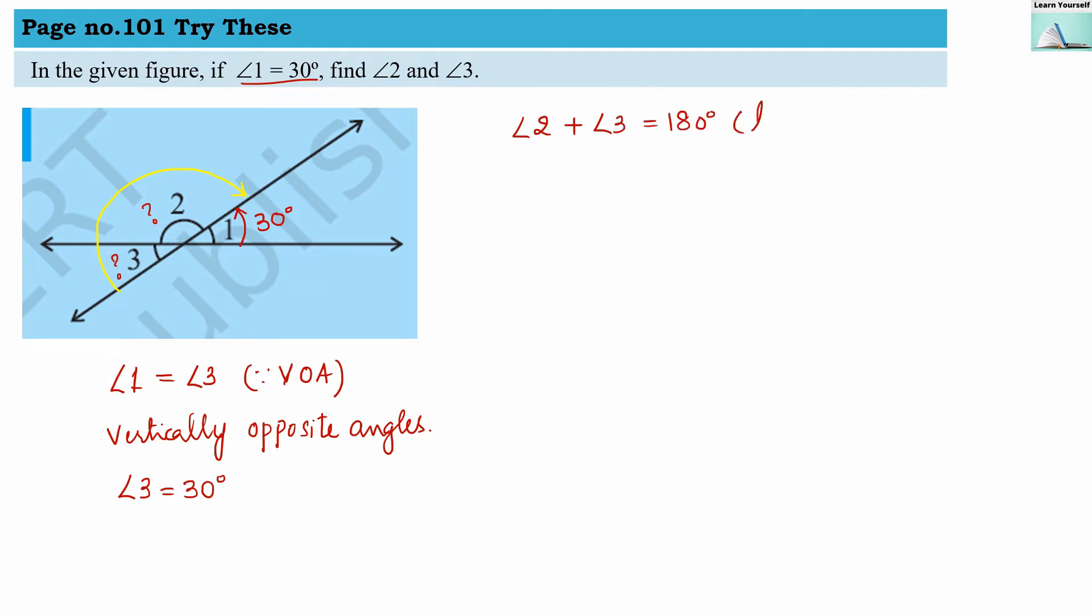Now I do not know the measure of angle 2, but I do know the measure of angle 3, so angle 2 plus 30 degrees equals to 180 degrees. Now angle 2 equals to 180 minus 30. We will get angle 2 equals to 150 degrees.